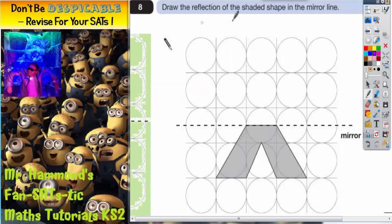Question 8. Draw the reflection of the shaded shape in the mirror line. Now there are actually two or three ways you can do this.